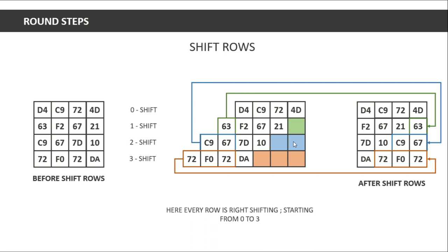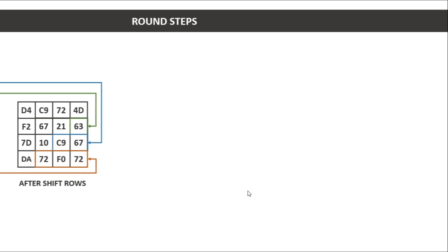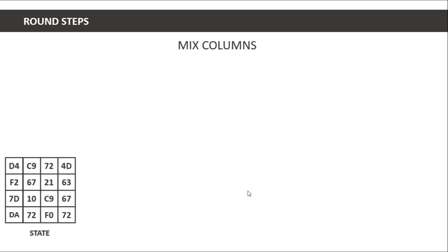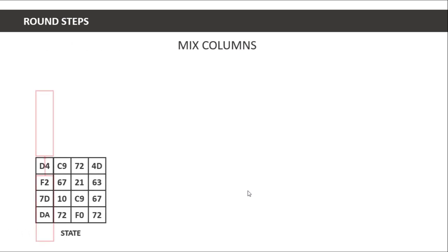For the last row, three columns shift and take their new places. The shifting is from right to left, starting from zero to three positions. After shift rows completes, the state is ready for mix columns.